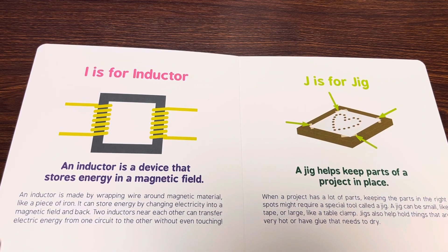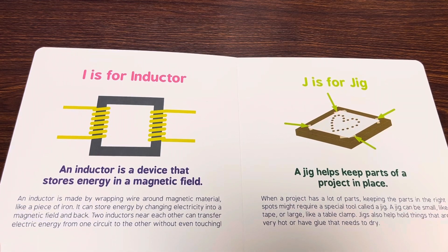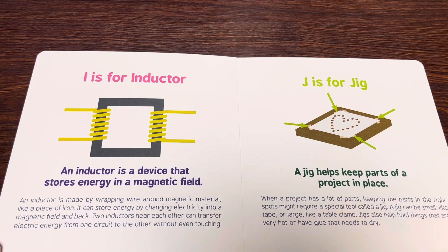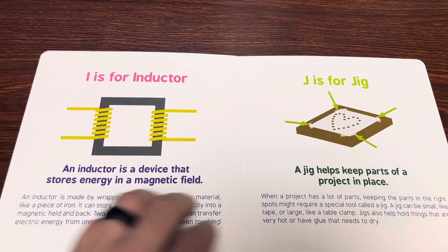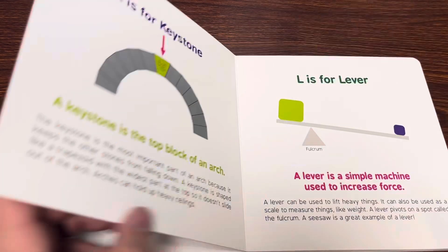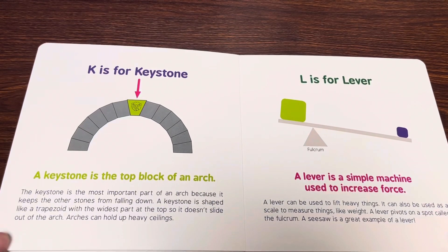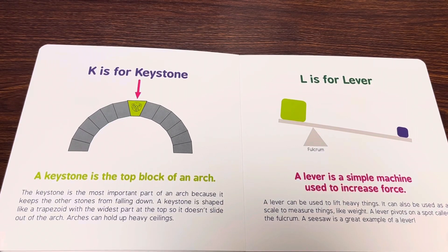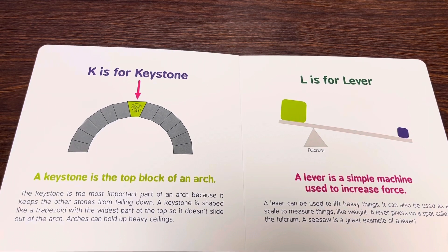J is for jig. A jig helps keep parts of a project in place. K is for keystone. A keystone is the top block of an arch.